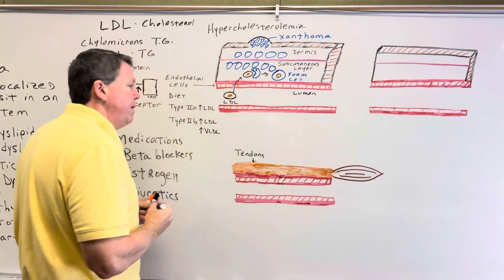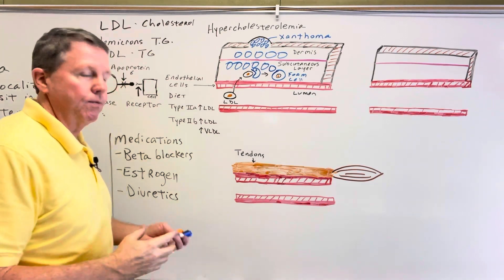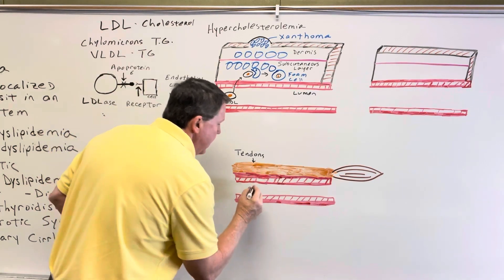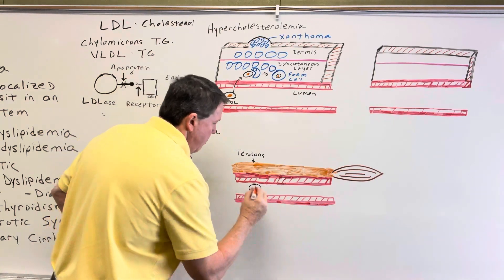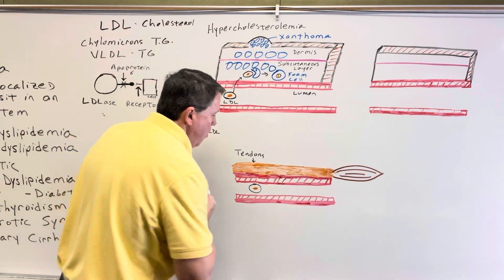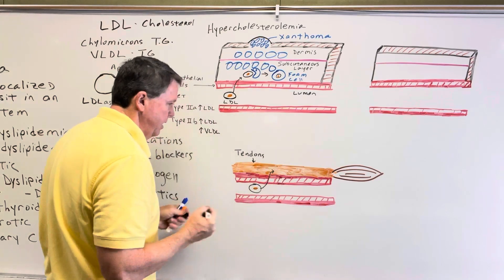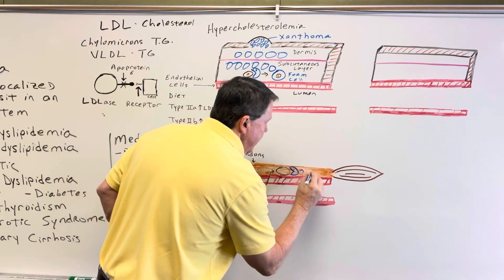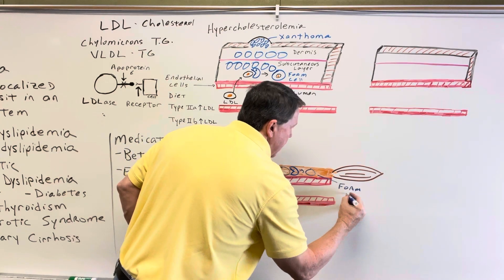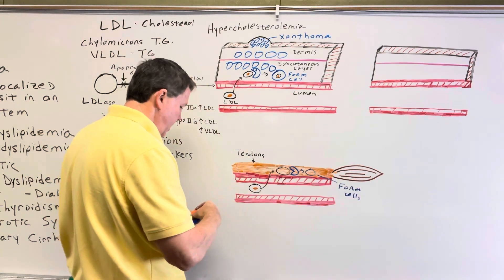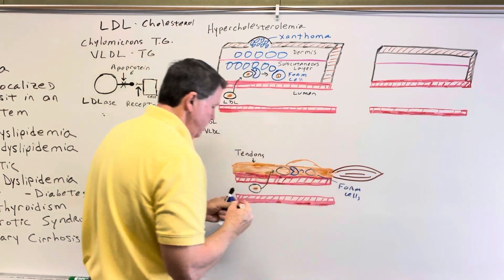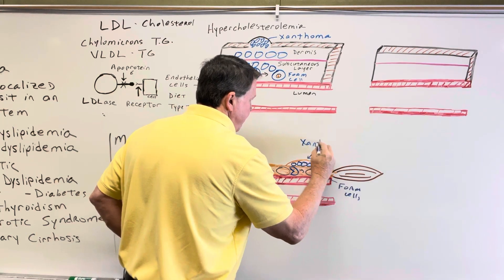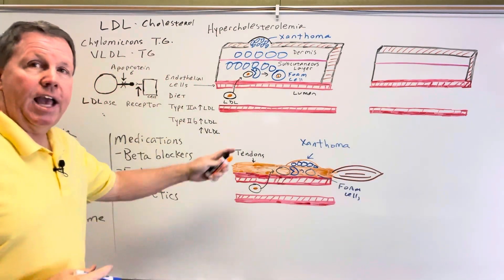It can also get into tendons, involving more of the triglycerides. The process is basically the same: the LDL or VLDL goes through the endothelial cells into the tendon, a macrophage creates foam cells, and as foam cells accumulate they form xanthomas in the tendon. These are called tendinous xanthomas.